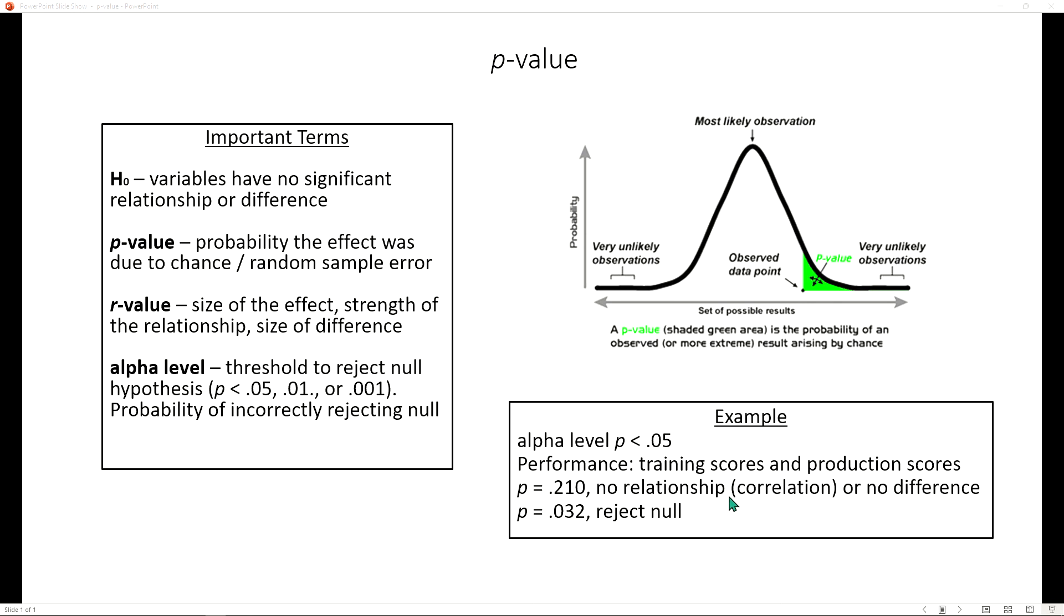Perhaps we've redesigned the training program, go through the process again of analyzing the data, and this time we determine that the p-value is 0.032. Therefore, it is statistically significant because it's less than 0.05. Therefore, we reject the null hypothesis, and in this example, we determine that our training program is working to some degree.